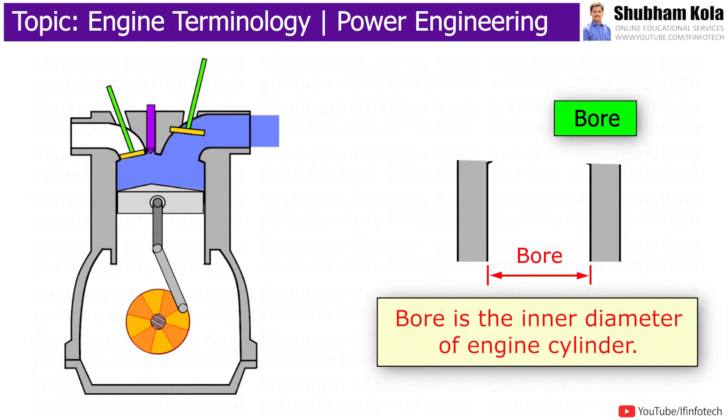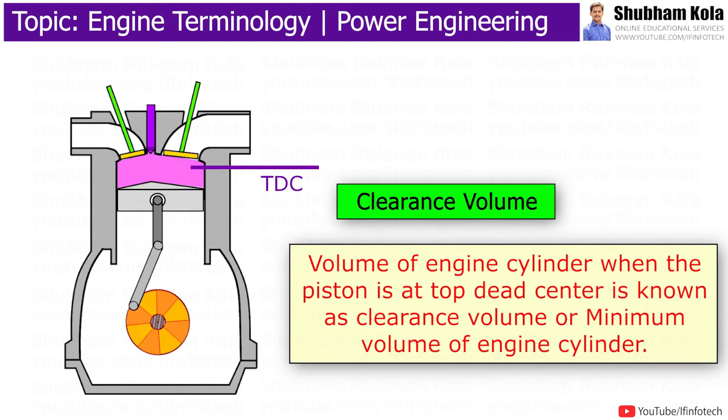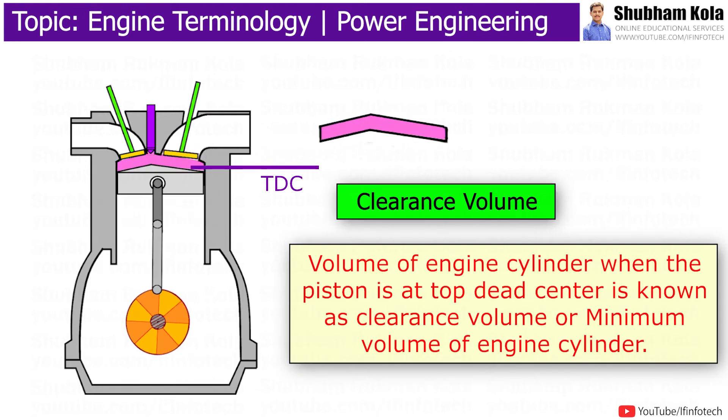The bore is the inner diameter of the engine cylinder. The volume of the engine cylinder when the piston is at top dead center is known as clearance volume, or minimum volume of the engine cylinder.